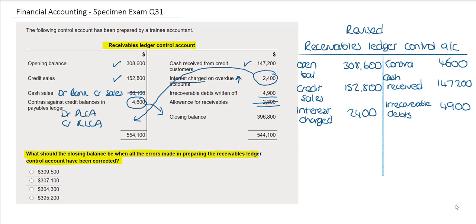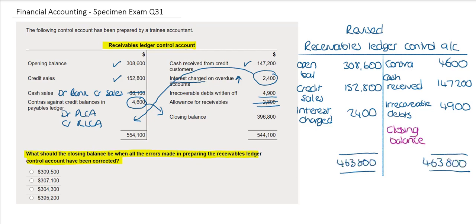With all of the entries now in the correct place, I will revise my account balance. My balancing figure, or closing balance, is now $307,100. Looking at the options available to answer, I can see that the correct answer is the second option.